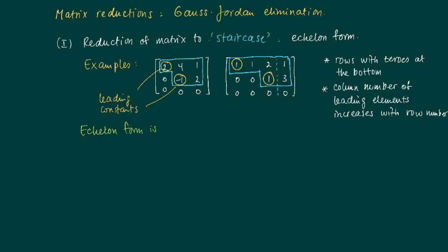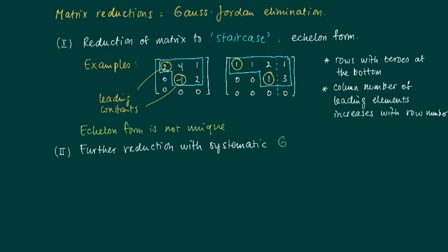This is called the echelon form of a matrix, and it's easy to see that the echelon form of a matrix is not unique. If we use the same kind of row manipulations as before, this form will not be unique, so we want a unique procedure — a unique characteristic matrix — and to arrive there we need further reduction using what we call Gauss-Jordan elimination.